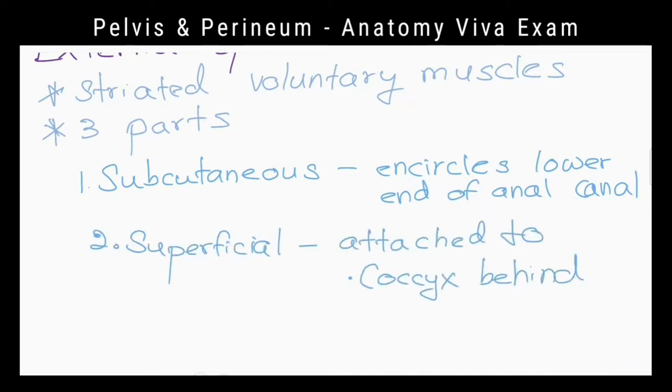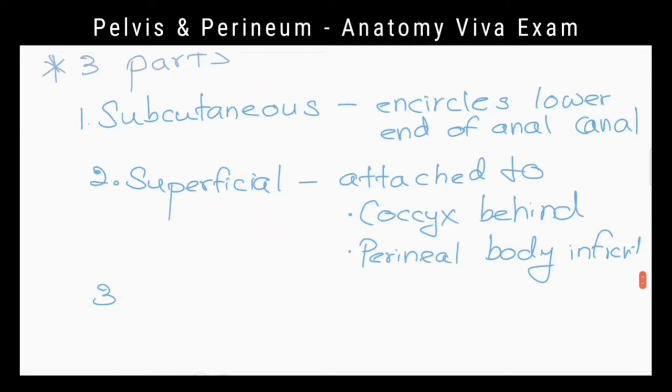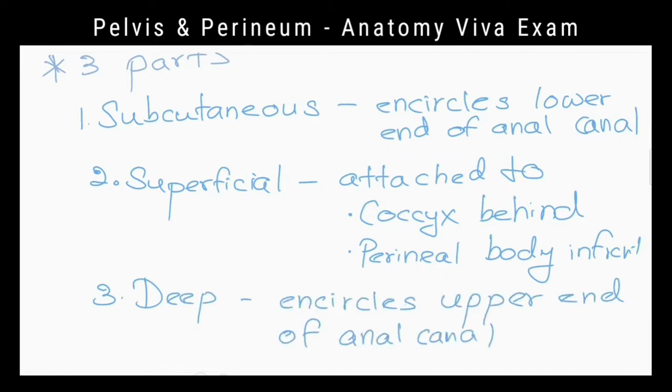It has three parts: subcutaneous part encircles the lower end of anal canal, superficial part is attached to coccyx and perineal body, deep part encircles the upper end of anal canal. Deep and subcutaneous parts have no bony attachments.